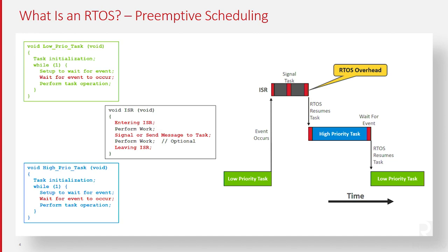Within the ISR, there's something that notifies a task that is waiting for that specific event to occur. When that happens, the event is sent to the RTOS. At the completion of the ISR, the RTOS evaluates whether the event that was signaled is for a more important task or a less important task to execute. If it is for a more important task, the RTOS doesn't return back to the interrupted task — instead, it switches over to the more important task.